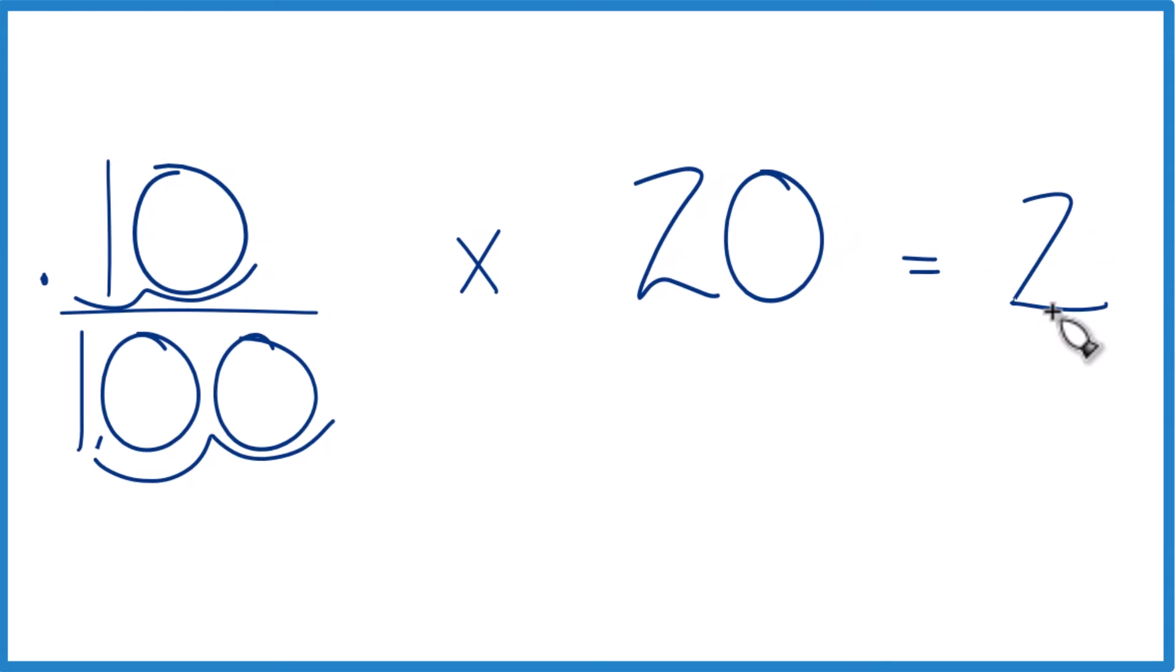The other way you can do this, this is a little more general, works with all kinds of percents, is to have 10 over 100 times 20, let's call it 20 over 1.